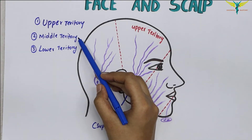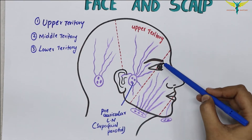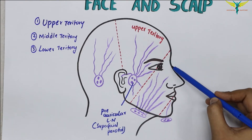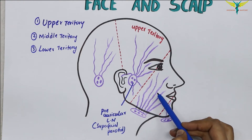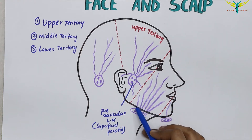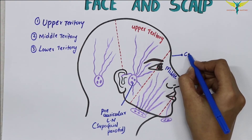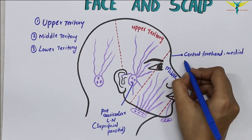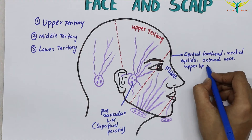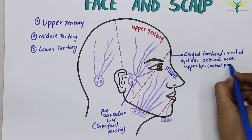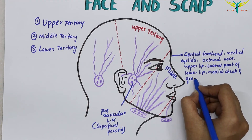The middle territory comprises the central part of the forehead, the medial halves of the eyelids, the external nose, the upper lip, the lateral part of the lower lip, the medial part of the cheek, and a greater part of the lower jaw.